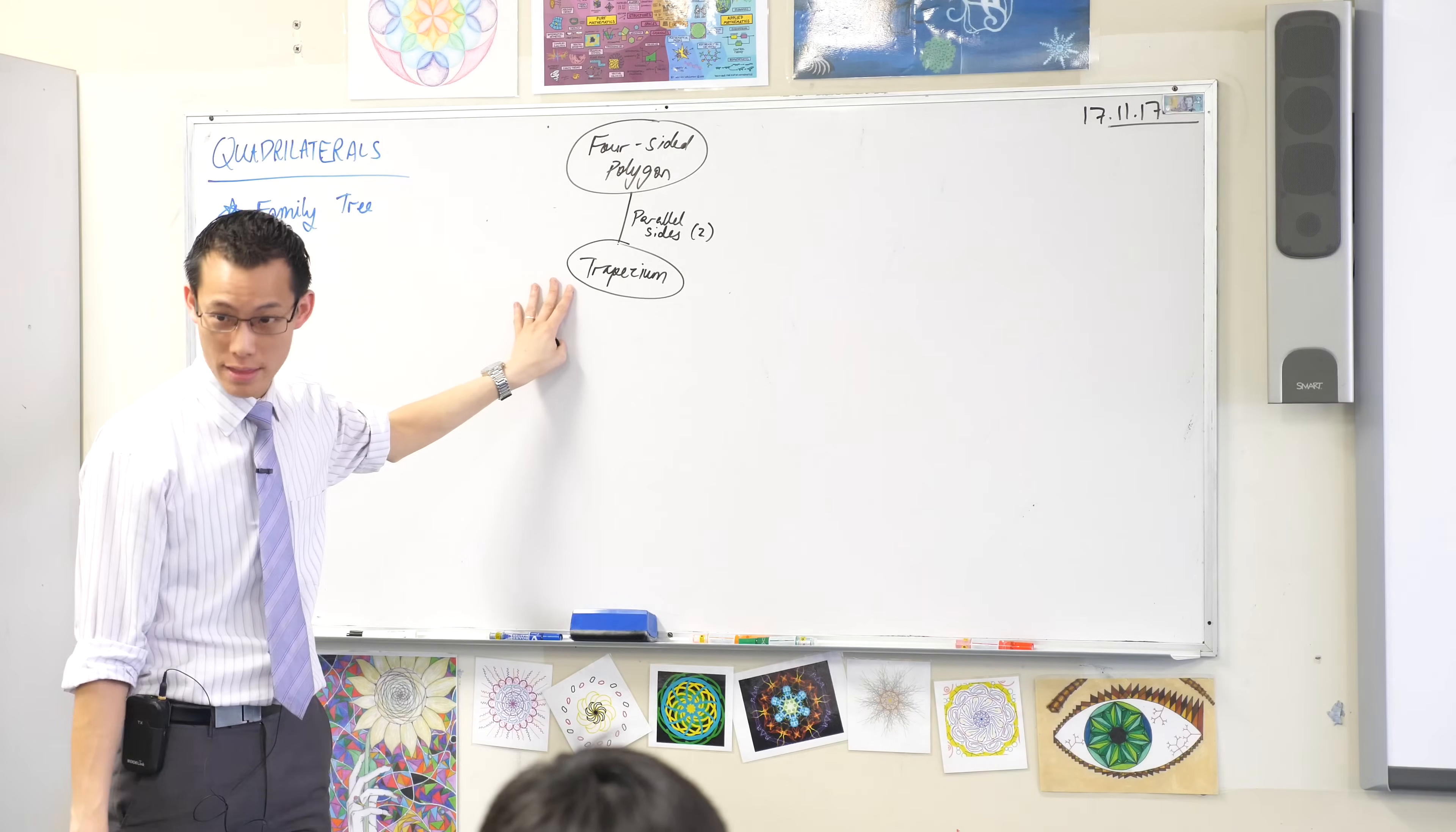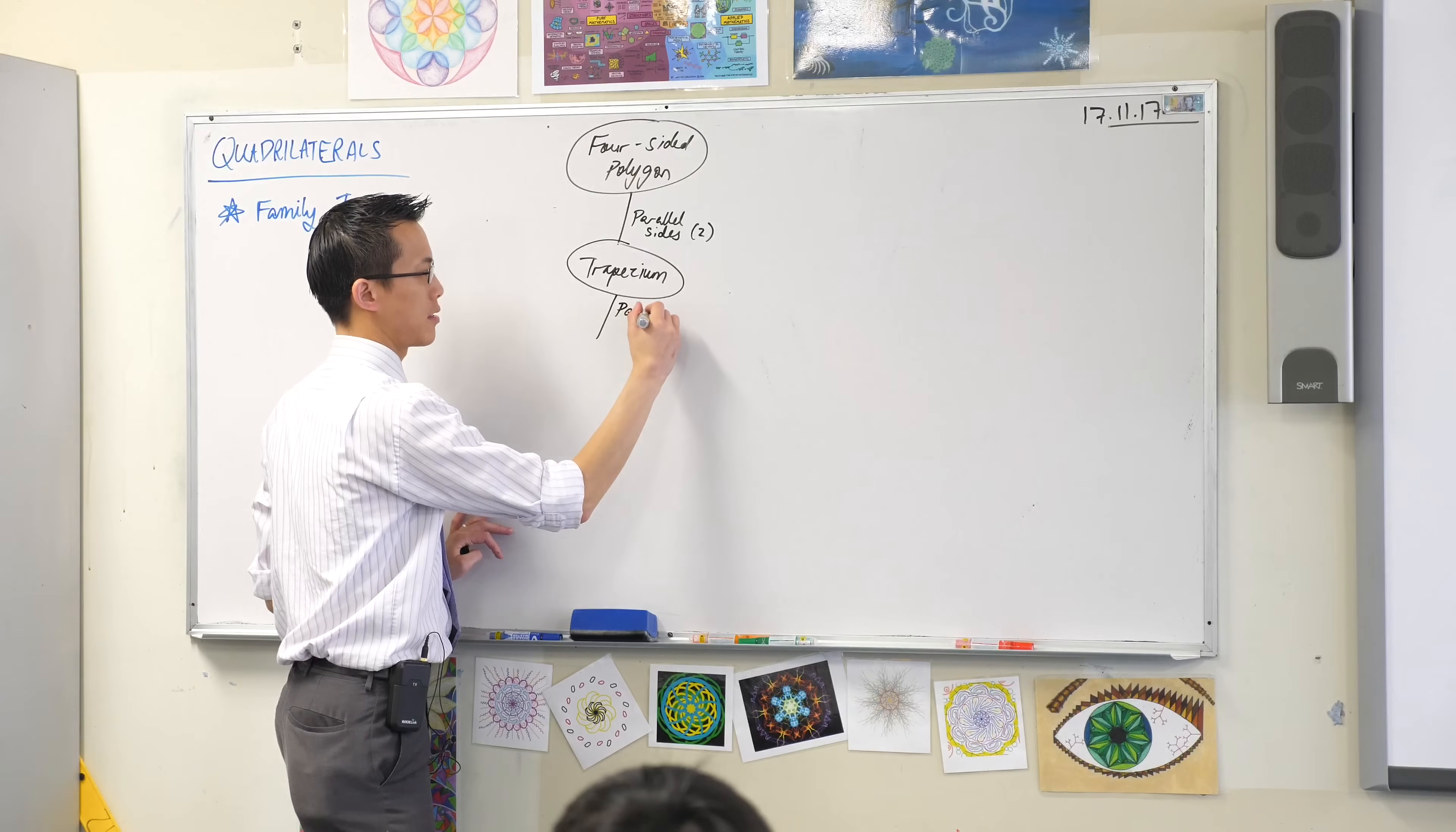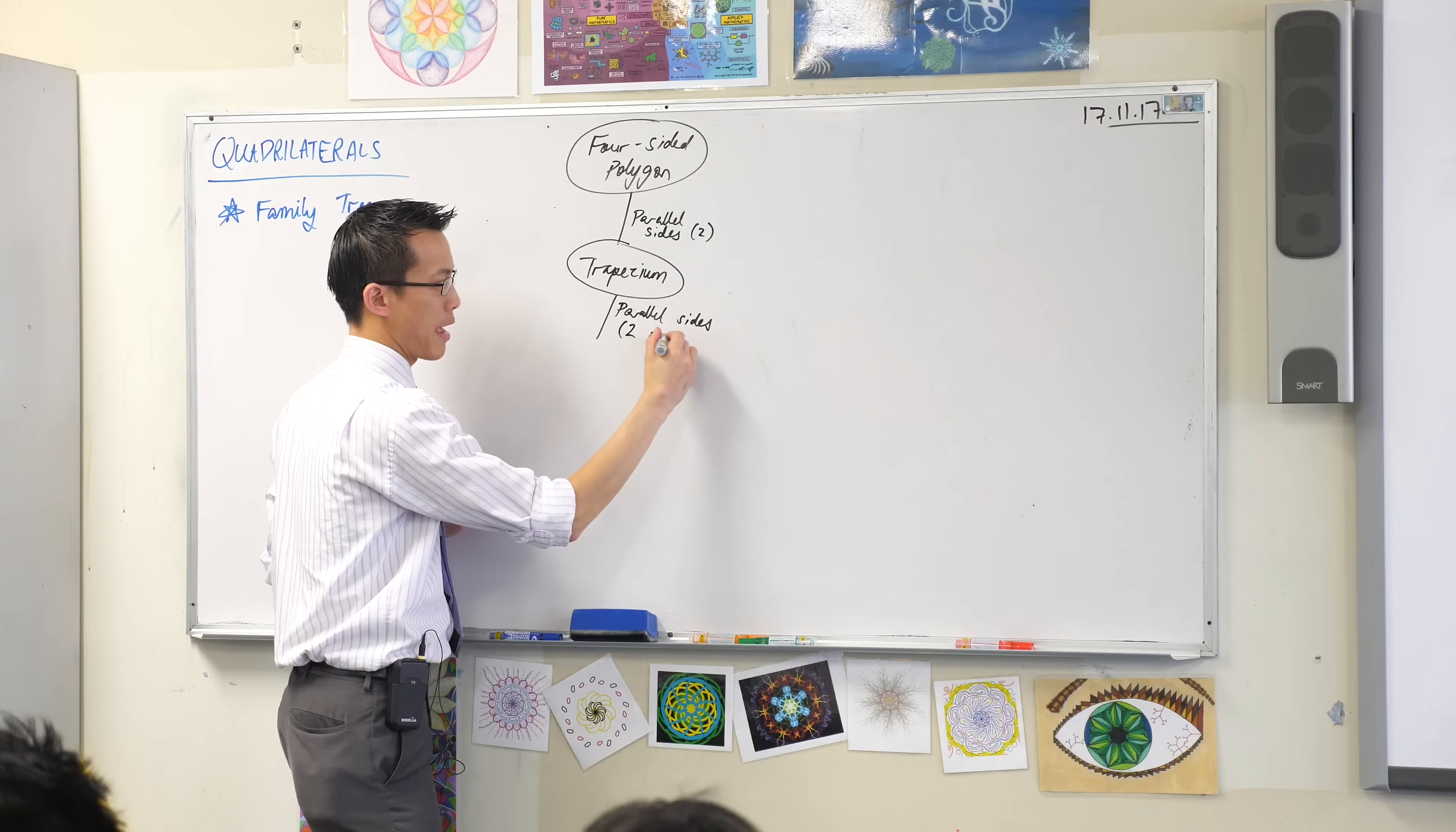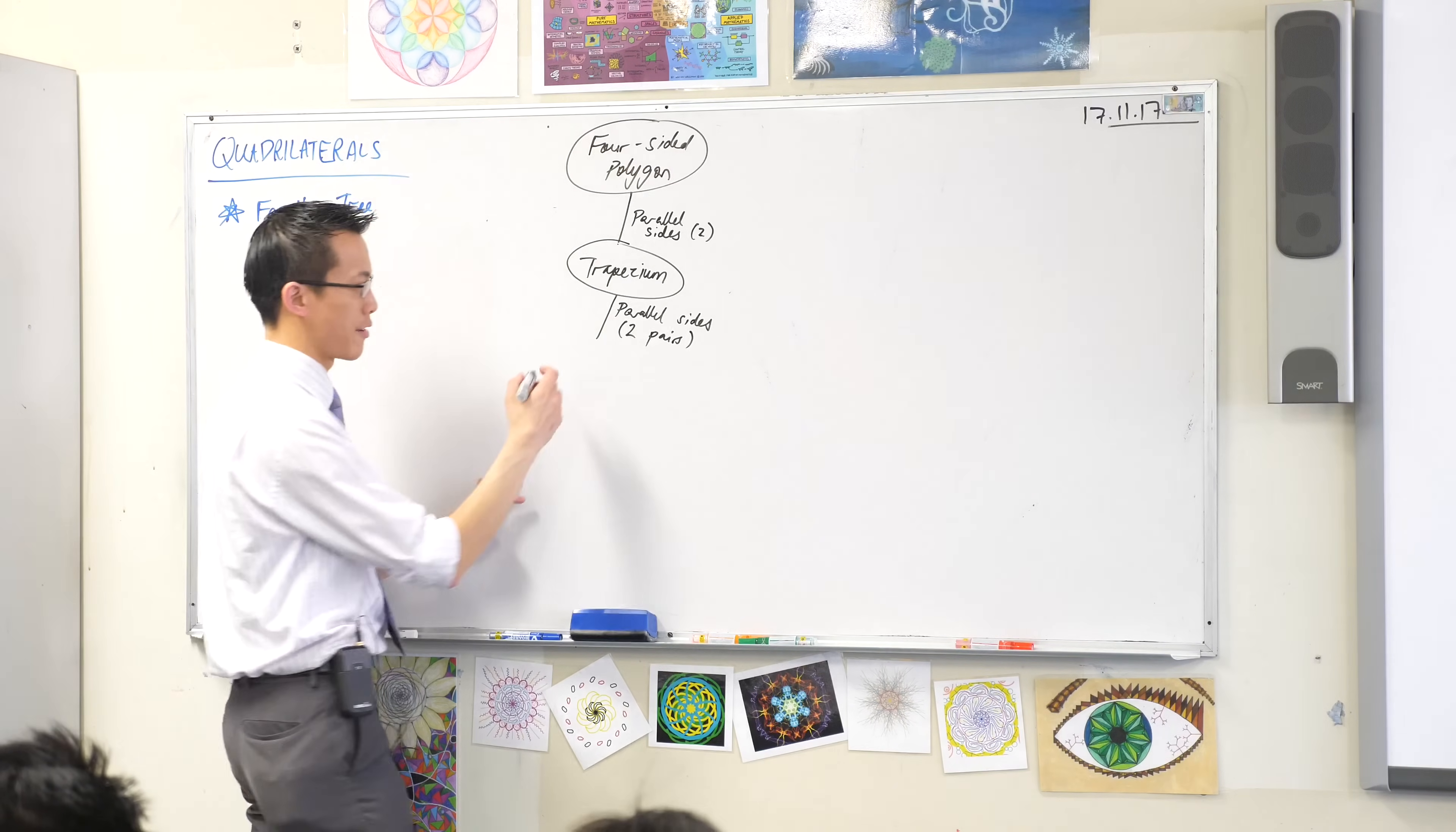But we can add more features and make things more specific. So for example, if I go to the trapezium and I add another pair of parallel sides. Now think carefully. So now I don't have two, I've got two pairs or four. This is the shape we created before. The inside shape. This has got so many parallel sides, it's called a parallelogram.